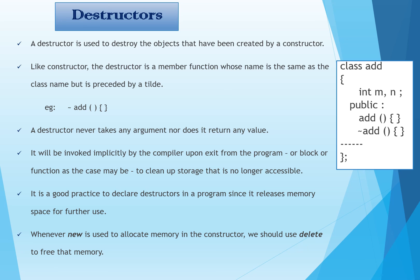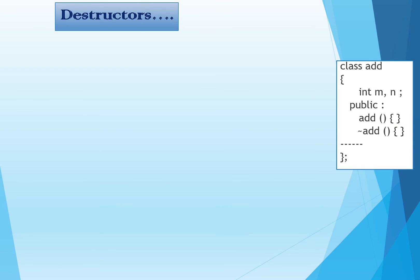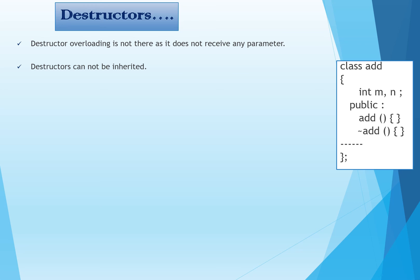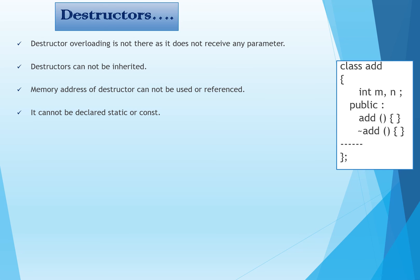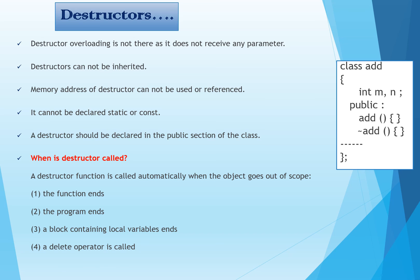Here is an example showing a constructor and a destructor. Destructor overloading is not possible as it does not receive any parameter, whereas constructor overloading is possible. Destructors cannot be inherited like constructors. The memory address of a destructor cannot be used or referenced. It cannot be declared static or const. A destructor should be declared in the public section of the class. A destructor function is called automatically when the object goes out of scope — when the function ends, the program ends, a block containing local variables ends, or a delete operator is called.